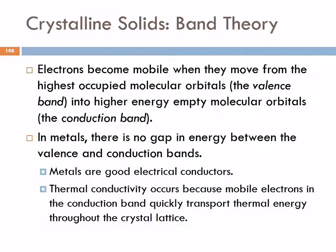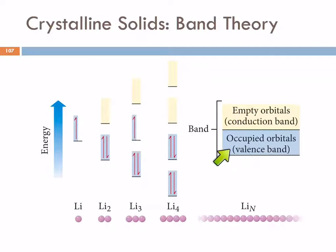Electrons become mobile — able to move across the solid — when they move from the valence band, the highest occupied molecular orbitals, into the conduction band, the empty anti-bonding orbitals. Whether they can move into that band or not depends on the gap between those two bands. In metals there is no gap at all, and so the electrons can move into the conduction band. I kind of envision it as a traffic jam — this lane is jammed but the shoulder is empty.